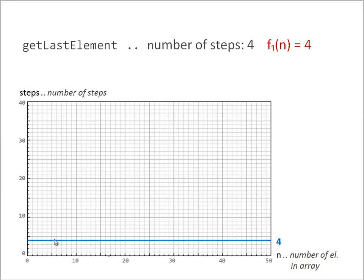The blue line shows how many steps need to be taken to run the method getLastElement. In this case, it's always four, regardless how big or small the array is.